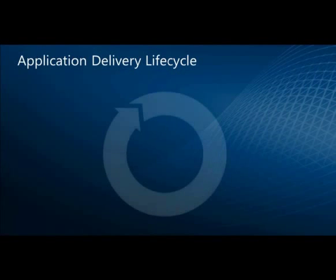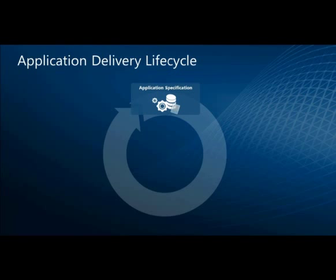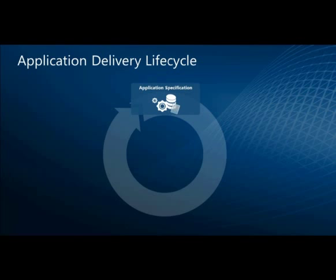The application delivery lifecycle in a private cloud moves to a very simplistic model. We have the application specification: what is the application, what are the resource requirements, operating systems supported, database configurations, runtime configuration? All that information comes together. An application specification gets enabled in a service template. The difference between an application and a service is that a service includes everything about the installation plus all the configuration — networking, storage, compute resources, on-demand configuration. The application plus all that information is delivered as a service.